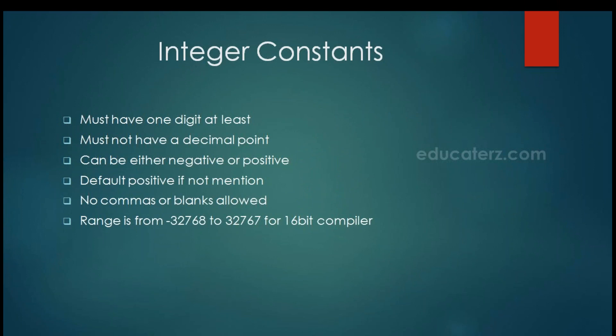Integer constants must have at least one digit and must not have a decimal point — integer constants have no decimal point. They can be either negative or positive; if no sign is given, by default it is positive. Commas or blank spaces are not allowed. The range of integer constants is from minus 32,768 to plus 32,767 for a 16-bit compiler.